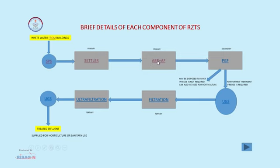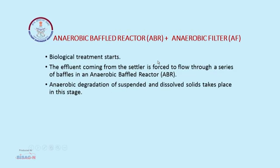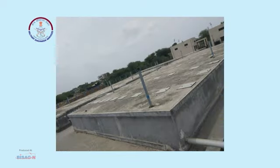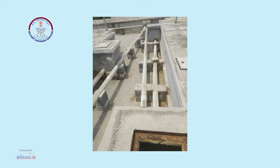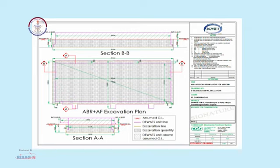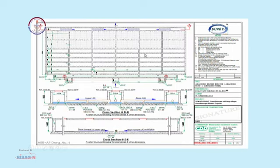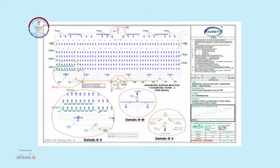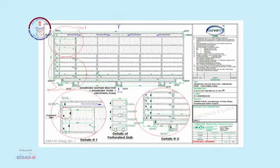The next component is ABR and AF — the Anaerobic Baffle Reactor and Anaerobic Filter. These parts are accommodated in one building. ABR 1 and ABR 2 are shown here, connected with a pipeline system for the planted gravel filter. The diagram shows different dimensions of ABR and AF, where the half portion is ABR and another half is the AF where filter media is also provided. These are vertical cross sections of the technology showing how treatment takes place.